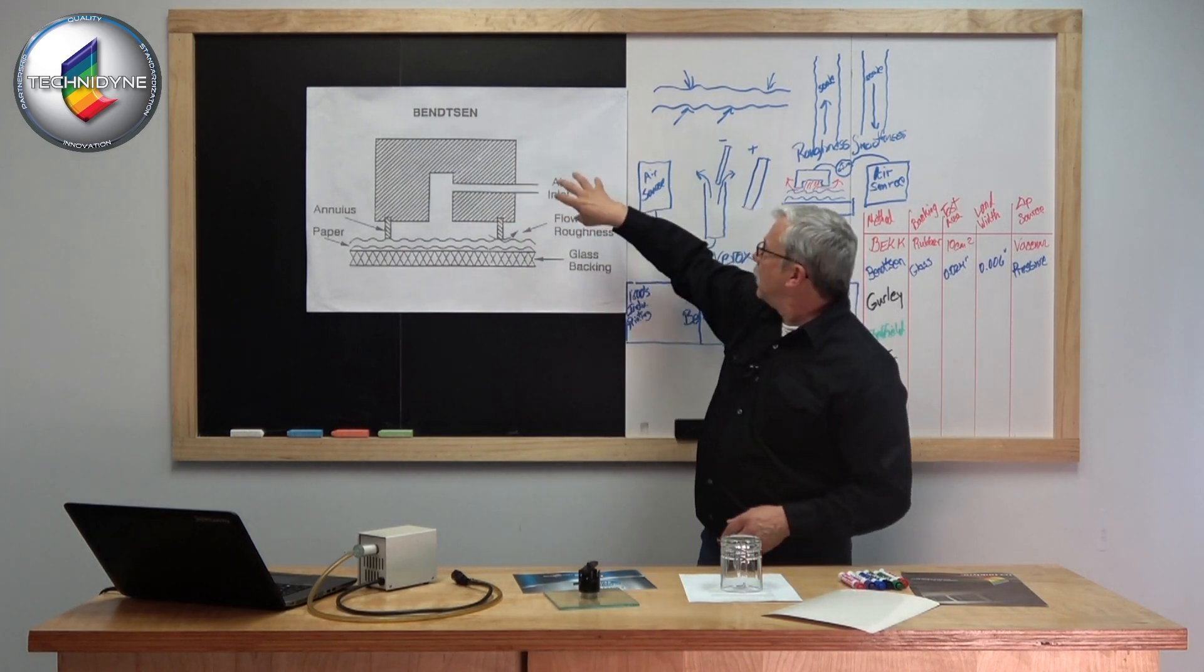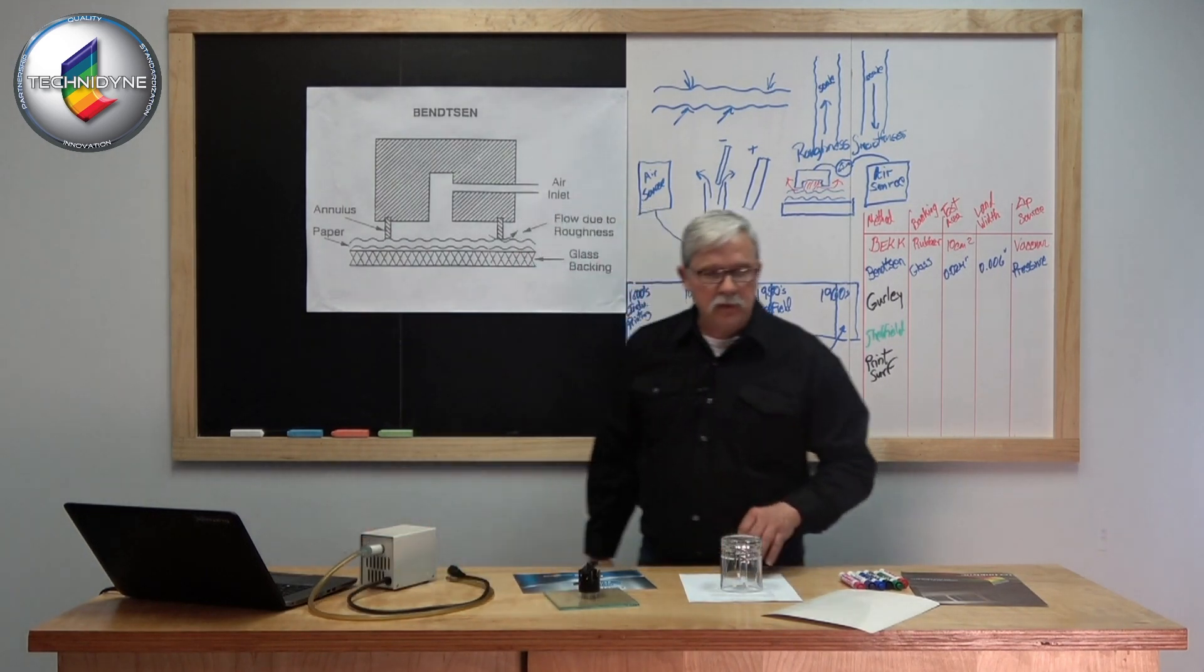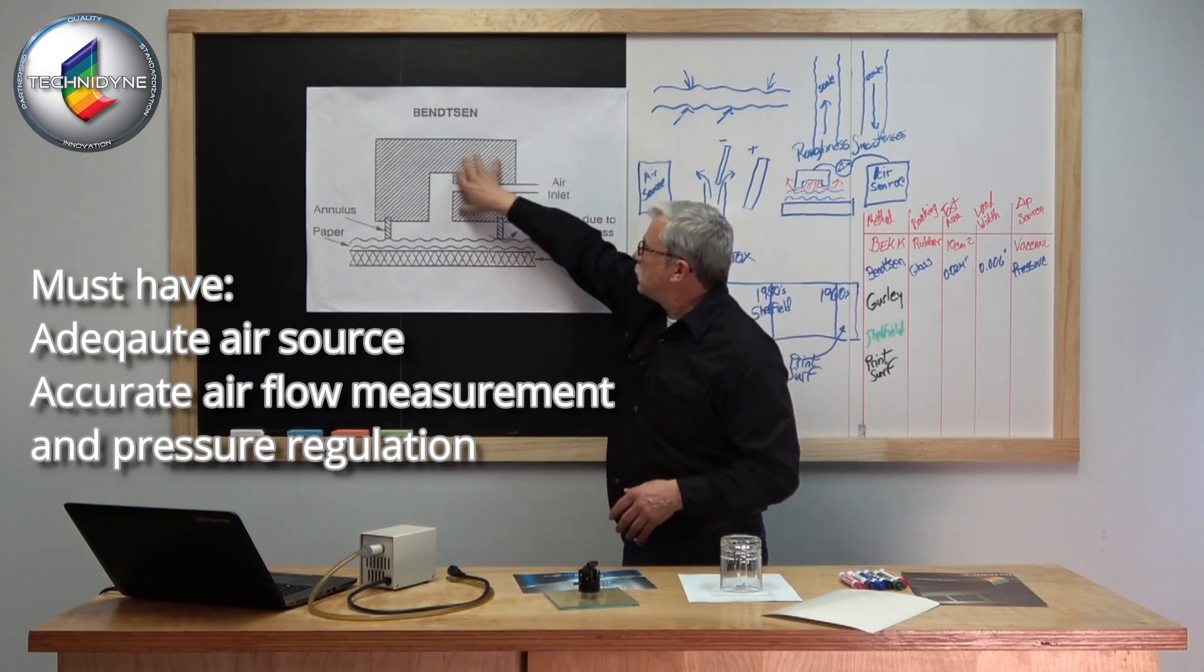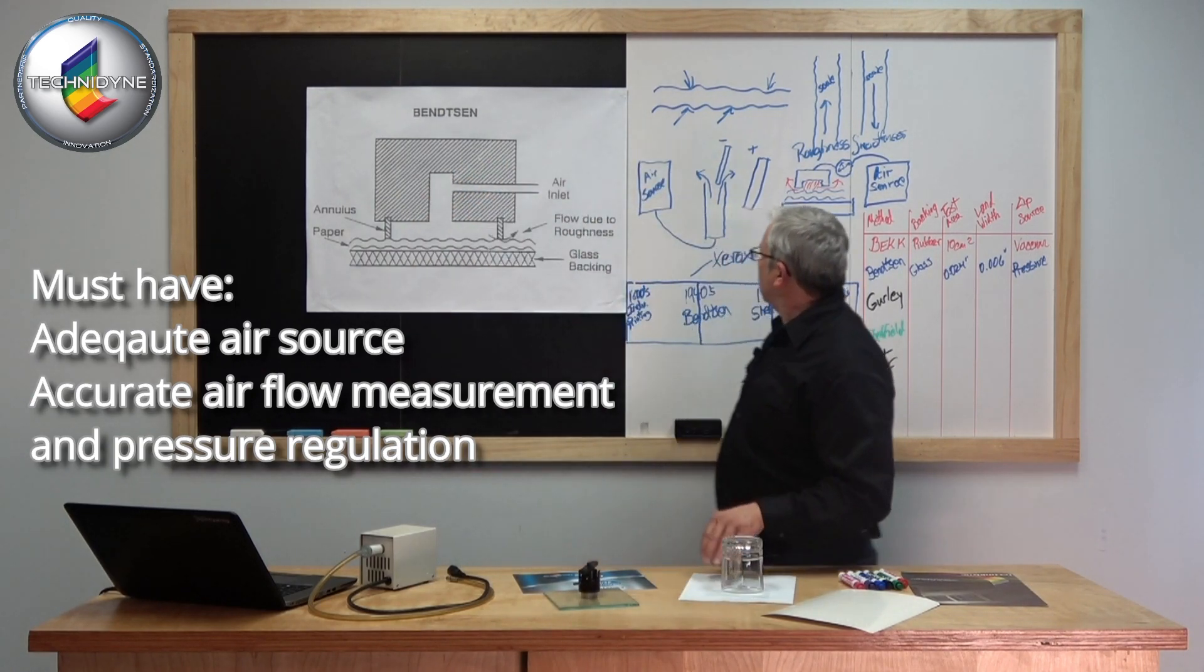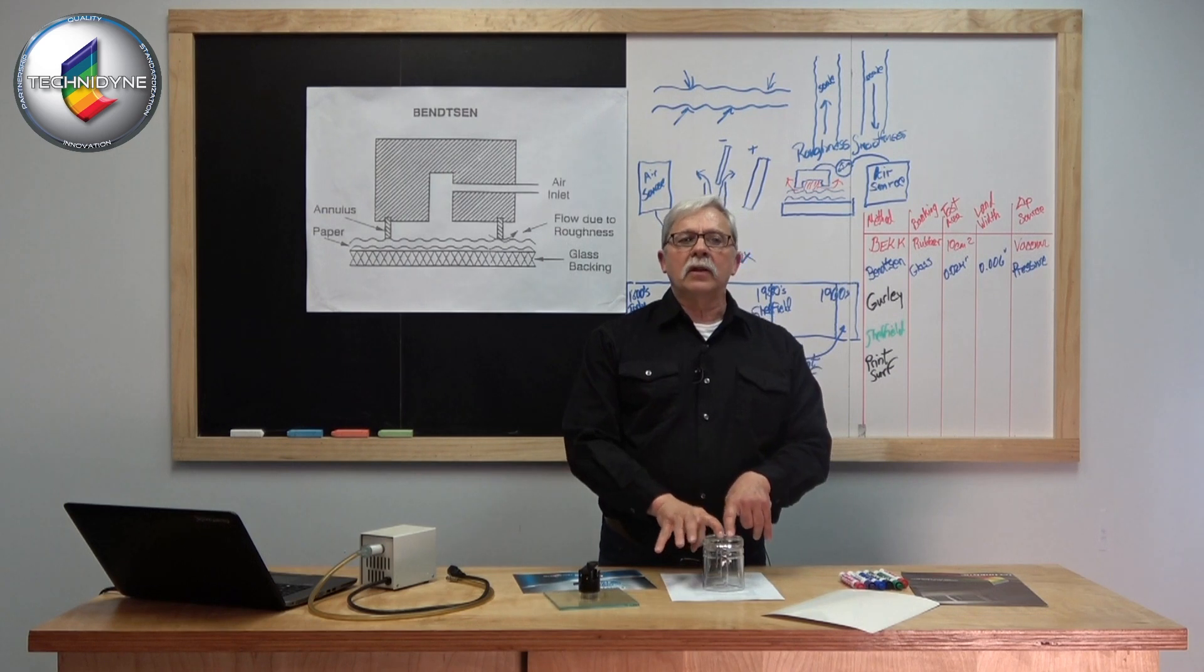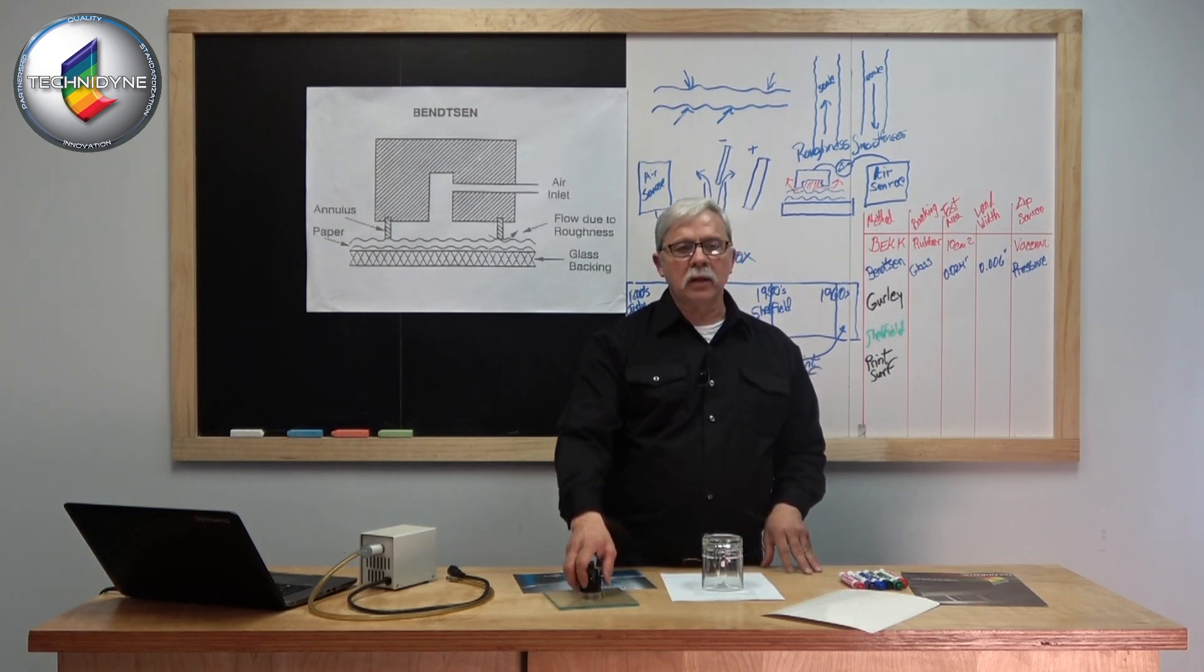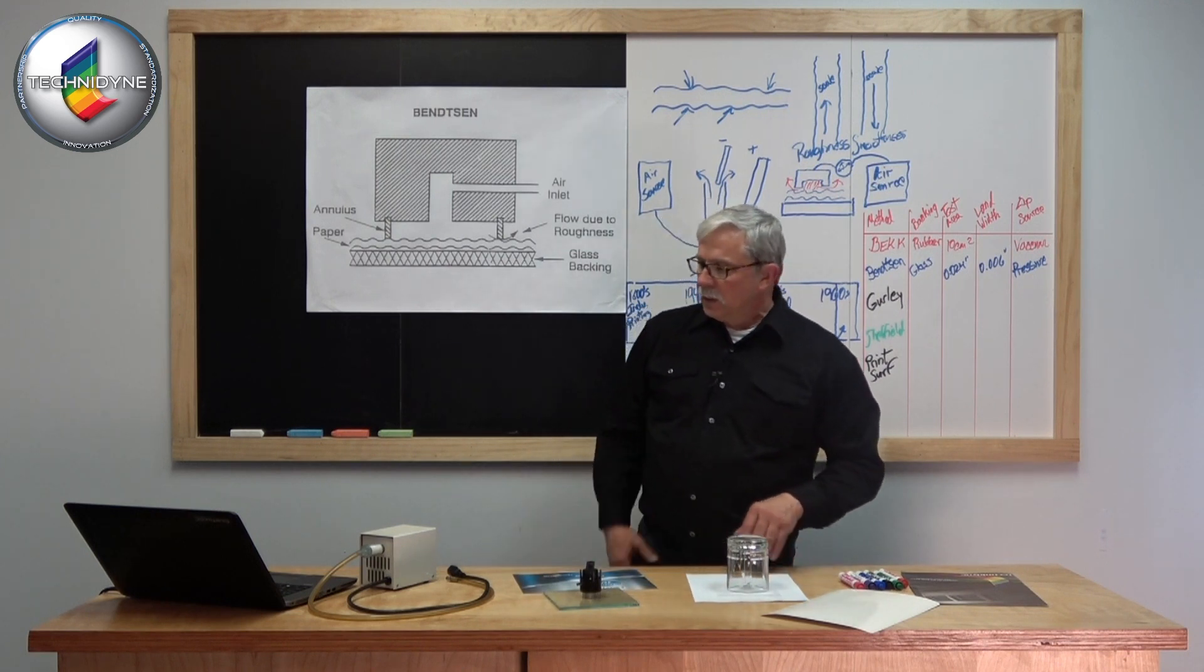In addition to this air inlet, upstream I'm going to need some type of air source like a small air compressor, some type of flow meter to measure the amount of air leaking out, and some means of measuring and monitoring the pressure that I develop underneath this cylinder.